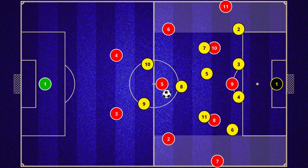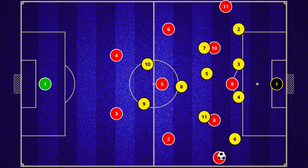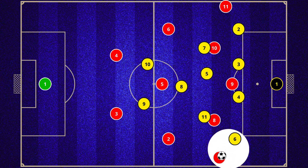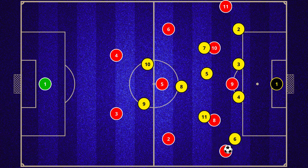Unlike players who play in the half-spaces, who need to be able to play short and even turn quickly, players in the side channels require much more in terms of the ability to unbalance in one-on-one situations. The presence of players in the half-spaces gives more freedom and time for these side players to receive, control, and go up against the fullback.